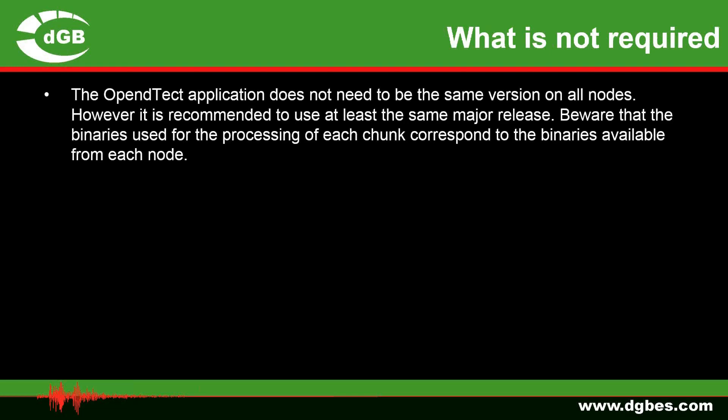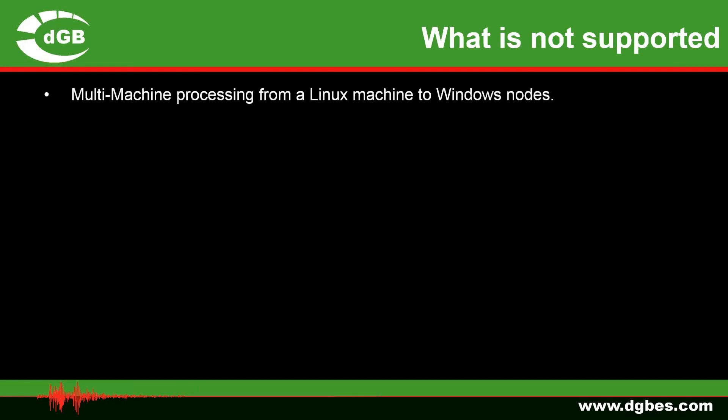The OpenDTec application does not need to be the same version on all nodes, so you can run 4.4 with 4.6. However, it is recommended to use at least the same major release, so a preferable combination would be, for example, 4.6d with 4.6g. Beware that the binaries used for the processing of each chunk correspond to the binaries available from each node. What is not supported is multi-machine processing from a Linux server machine to Windows nodes.